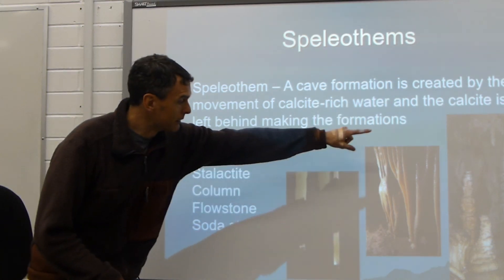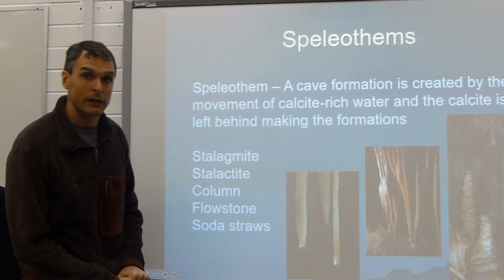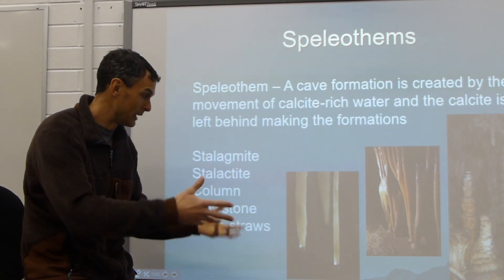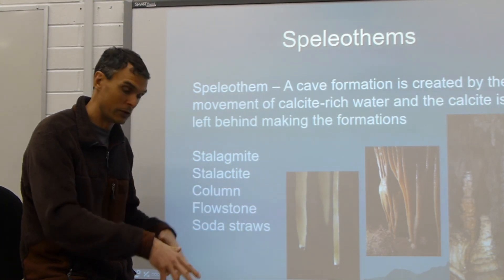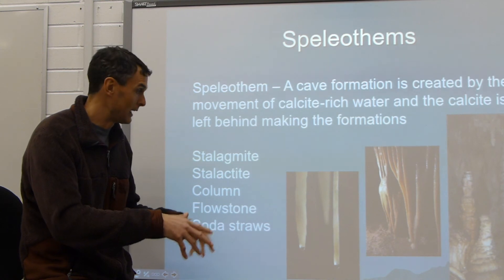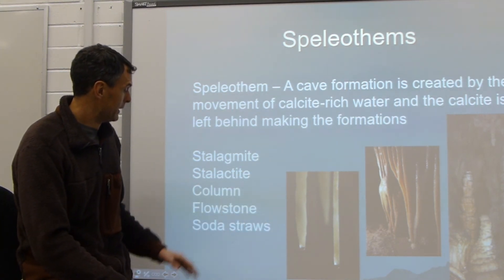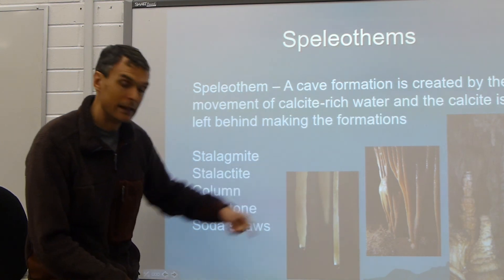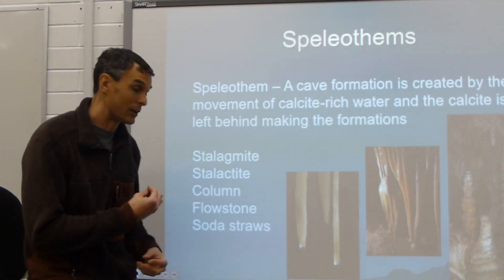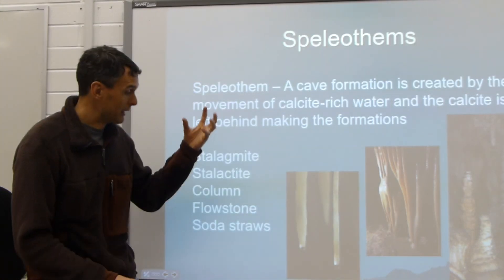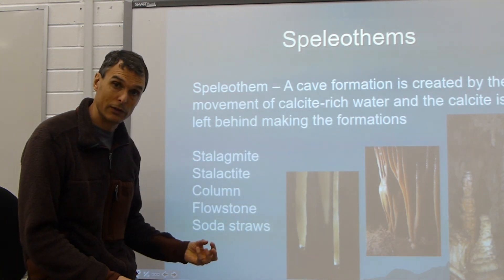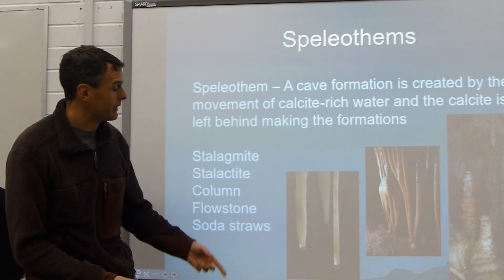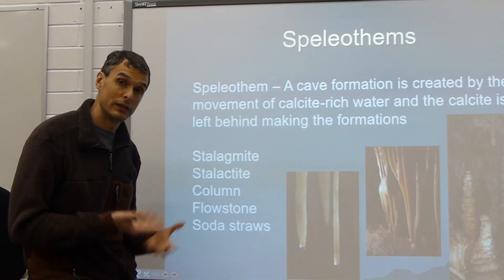Flowstone is sometimes called draperies. It's all these weird, unique undulating features created as water flows over the surface inside the cave and leaves deposits behind. The last feature is called a soda straw — you can see one right here. It's shaped exactly like it sounds: hollow on the inside, straight on the outside. Calcite-rich material flows over the top and through it, and eventually the bottom closes off. This is like a precursor to a stalactite.